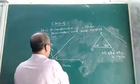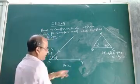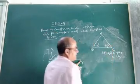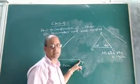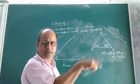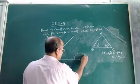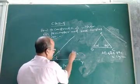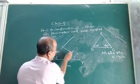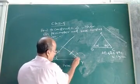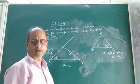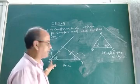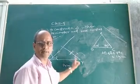At vertex Y, construct half of angle C. The measure of angle C is 60 degrees, so half of C means 30 degrees. So you draw 30 degrees at vertex Y. Thus, we have constructed half of angle B at vertex X and half of angle C at vertex Y. These two angle bisectors will intersect at a point — suppose that point is A.